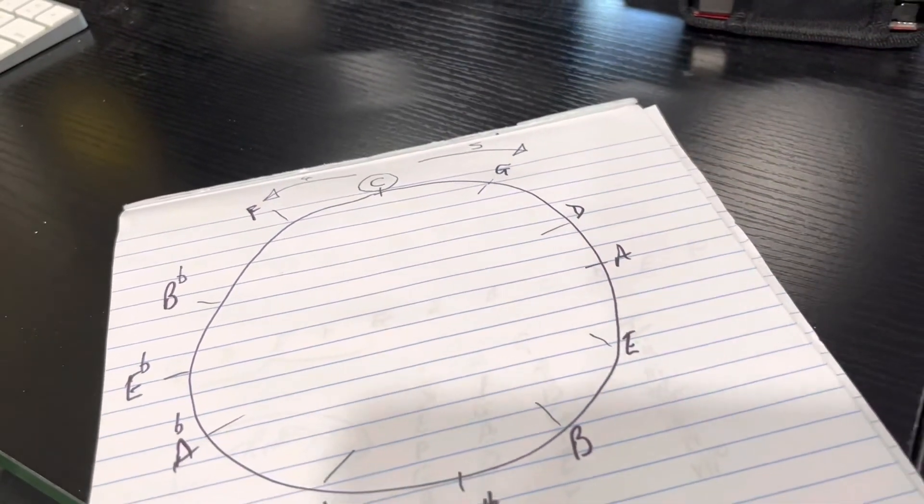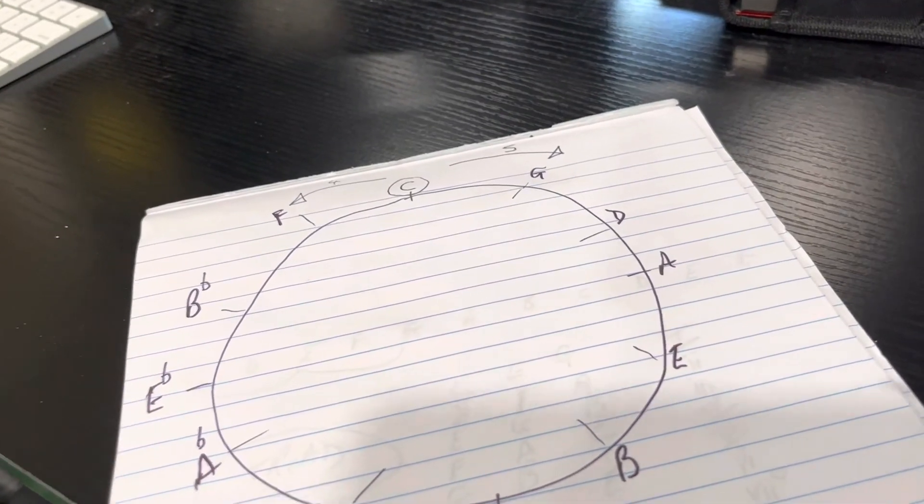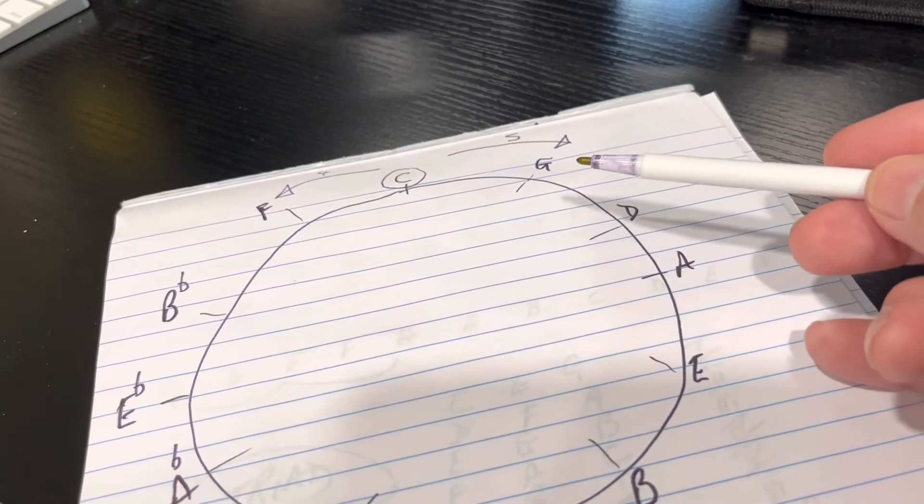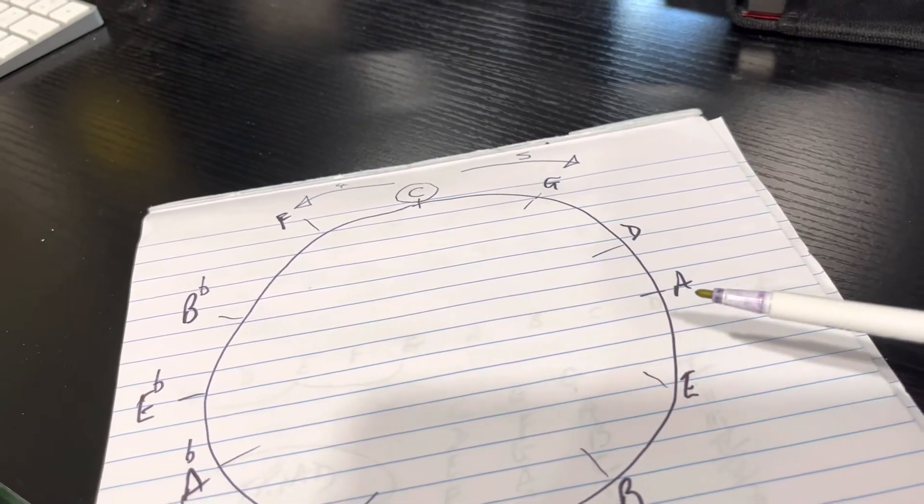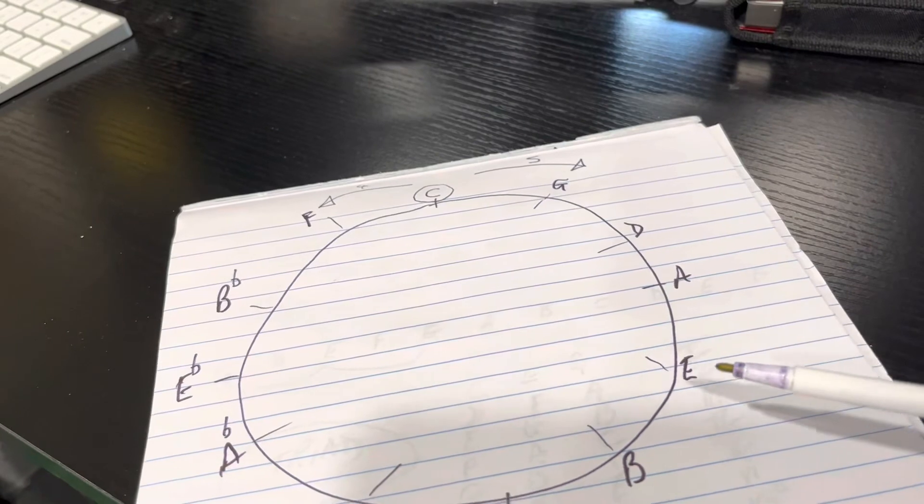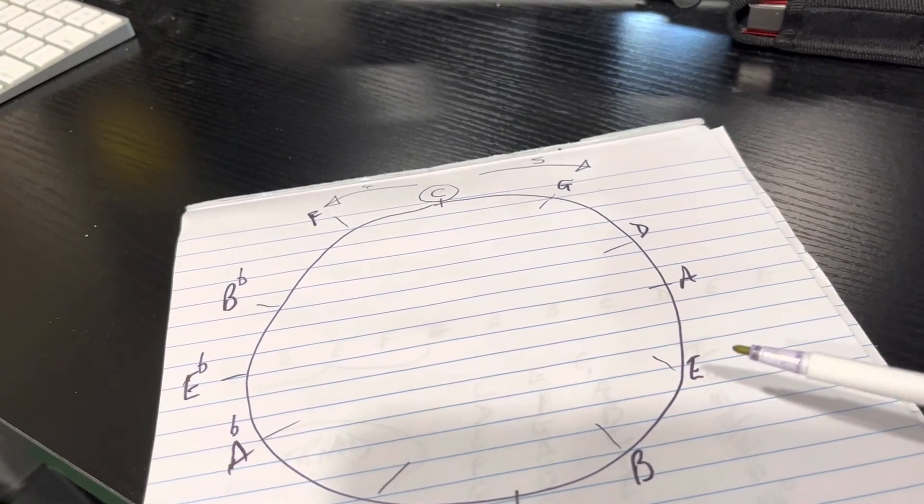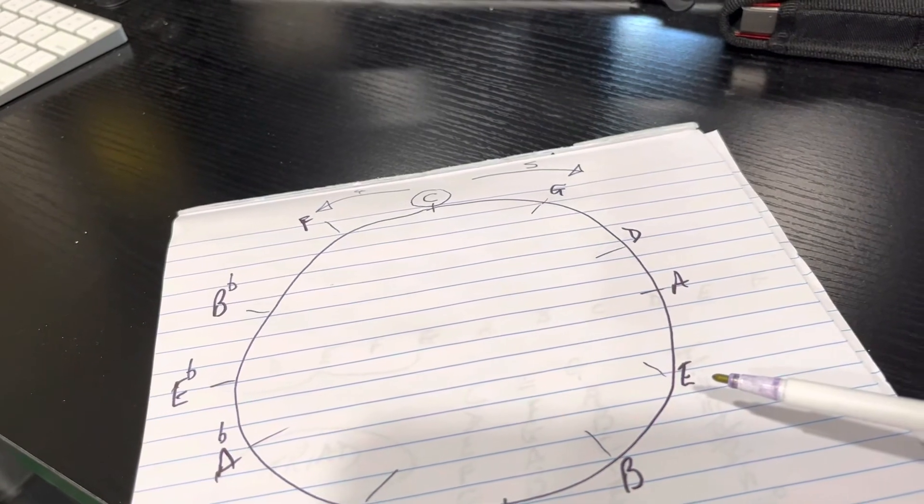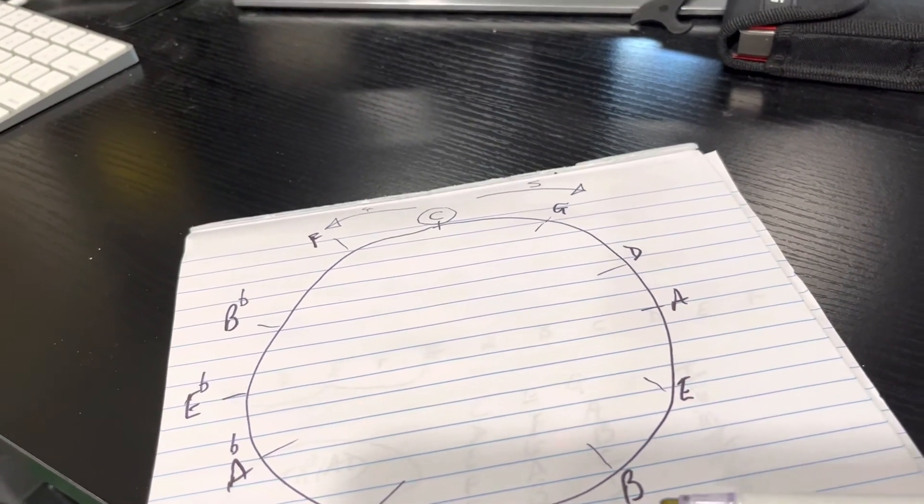So if you want to find the minor chords in the key of G major, we go through D and through A and we get to E and B. E minor is the two chord and B minor.